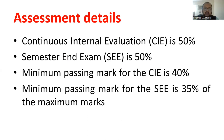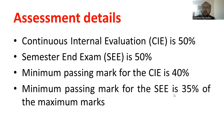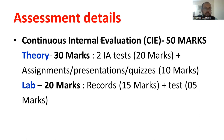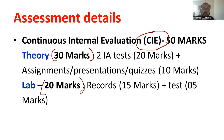The continuous assessment is 50% and the semester end examination is 50% — total 50-50. 50 for theory internal and 50 for university examination. The minimum passing criteria for continuous assessment is 40%, and the minimum passing criteria for the semester end examination is 35%. The continuous internal evaluation carries 50 marks, divided into 30 for the theory component and 20 for the laboratory component.